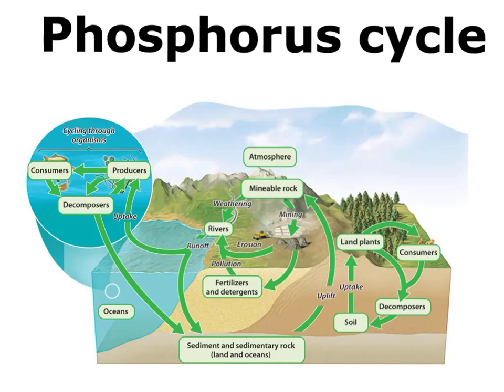The last of the biogeochemical cycles we'll be talking about this chapter is the phosphorus cycle. I like to do this one last because in a lot of ways this is the simplest cycle we've talked about so far. The reason this one's easy is if you look up here at the atmosphere part of the cycle, there are no arrows coming towards or leaving from the atmosphere, which means there is no atmospheric stage to the phosphorus cycle.